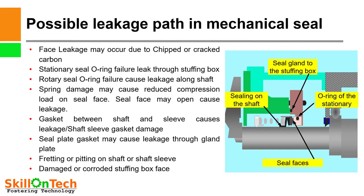Possible leakage paths in a mechanical seal: A picture of a mechanical seal is shown where we can see leakages may come from the mechanical seal due to sealing on the shaft, the seal faces, both mating seal faces, and an O-ring provided in the stationary seal face. Damage of this O-ring may also cause leakage. An O-ring provided in the seal gland to the stuffing box may also be a reason for leakage.